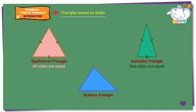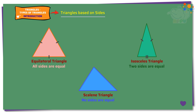Scalene triangle. A scalene triangle is a triangle that has no sides equal. Here we mark one side with one hatch mark, another side with two hatch marks, and the remaining side with three hatch marks, indicating all three sides are unequal.